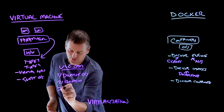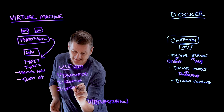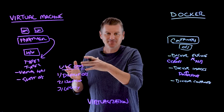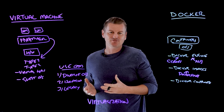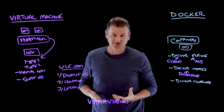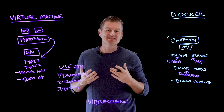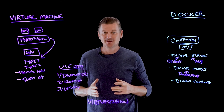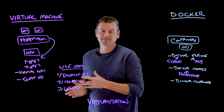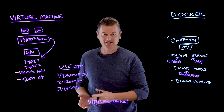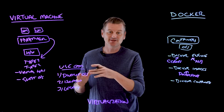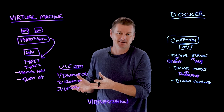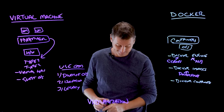Number three is legacy applications. VMs are well-suited for running legacy applications that rely on specific operating system versions or configurations that might not be compatible with the host OS or other containers. You can set up an environment that is perfect for that legacy application and not have to change it.